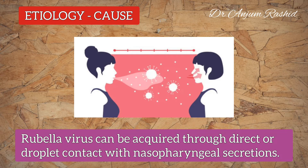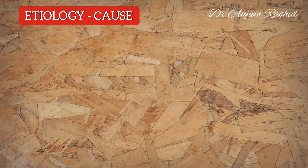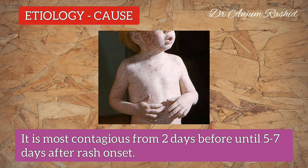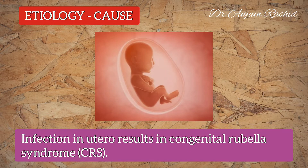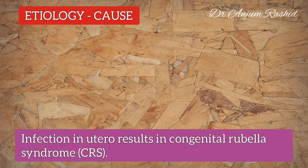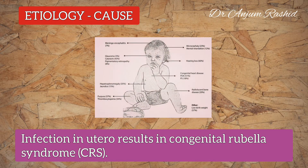Rubella virus can be acquired through direct or droplet contact with nasopharyngeal secretions. It is most contagious from two days before until five to seven days after the onset of rash.